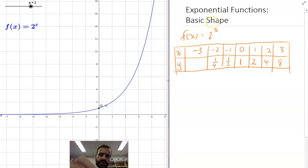And then 2 to the negative 3 is the same as 1 over 2 cubed, which is 1 eighth. And hopefully you can see what's happening here. It's halving each time, or doubling if you go the other way.